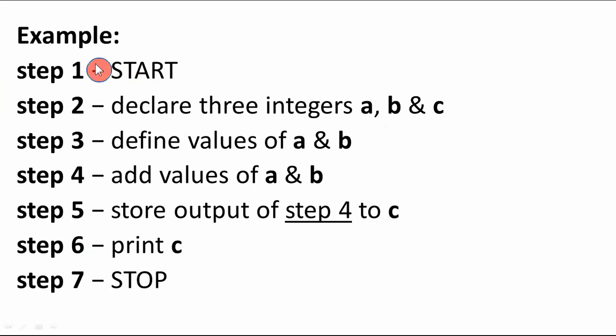Here is an example — an algorithm to find the sum of any two numbers. There are seven steps. In step one, we start the program. In step two, we declare three integers a, b, and c. In step three, we define the values of a and b. In step four, we add the values of a and b and store the sum in a third variable c. In step six, we print c, and in step seven we stop. This is a logical set of steps to find the sum of two numbers.